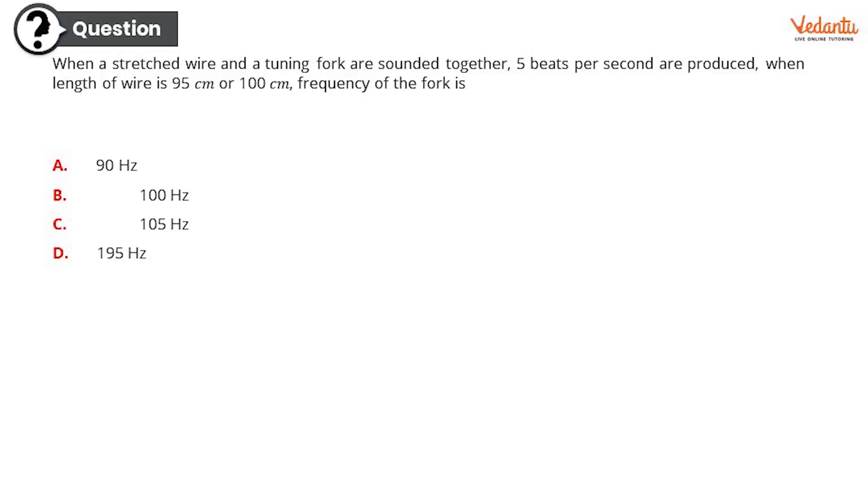Question number five: when a stretched wire and a tuning fork are sounded together, 5 beats per second are produced when length of wire is 95 centimeter or 100 centimeter. Frequency of the fork will be: Option A: 90 hertz. Option B: 100 hertz. Option C: 105 hertz. Or option D: 195 hertz. A rather looking simple question but might be difficult for all of you guys, so let me know what is the answer.